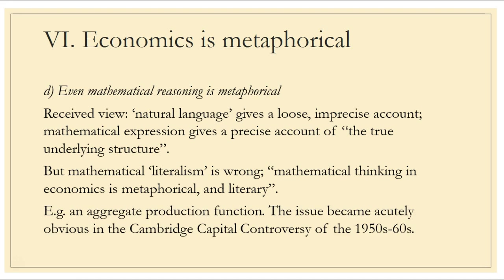For example, the aggregate production function — representing total output as a function of exogenously given technology, some amount of labor, and some amount of capital — is really just a symbolic system and therefore metaphorical. That function, even when given a particular functional form in an equation, is not literally the way the world is. This became acutely obvious in the Cambridge Capital Controversies of the 1950s and 1960s.